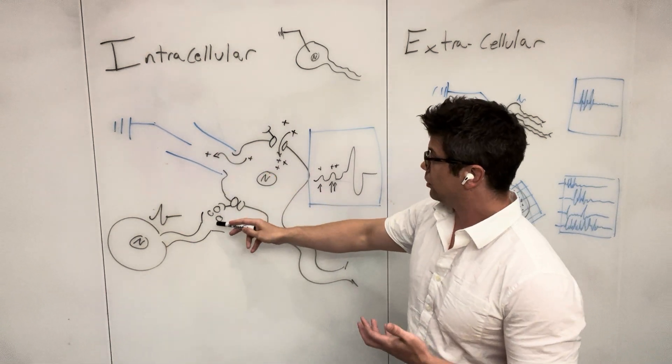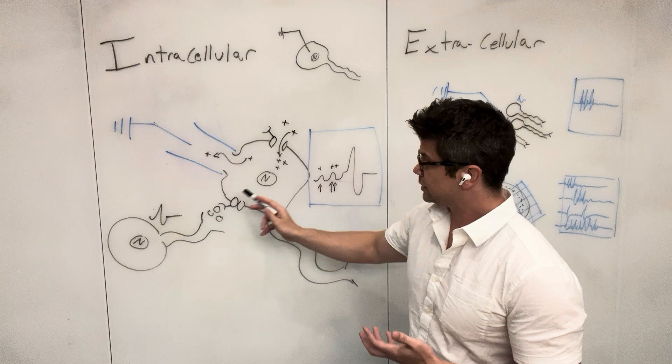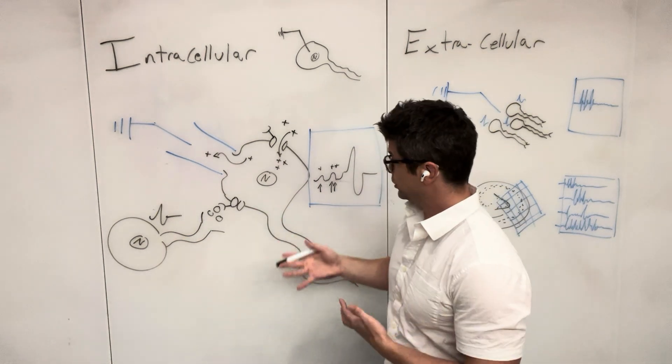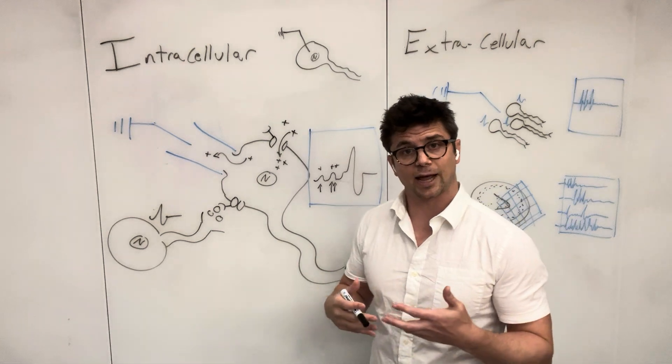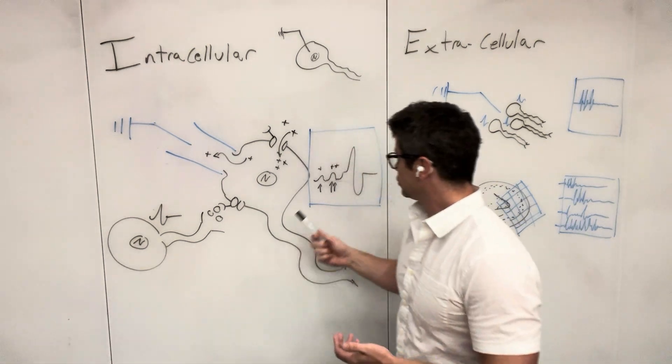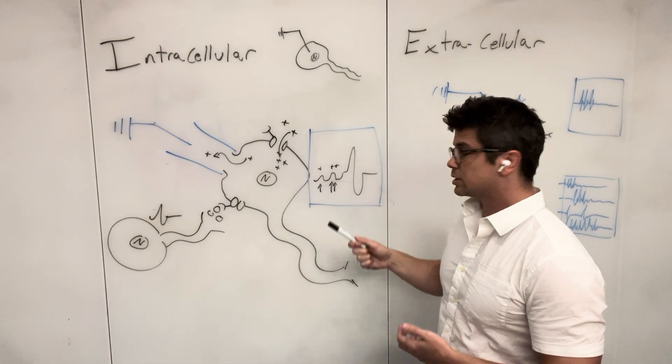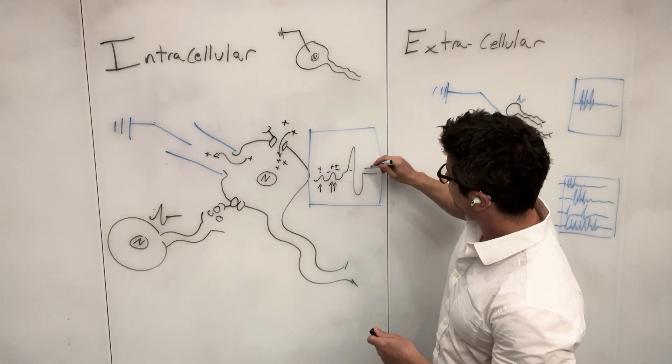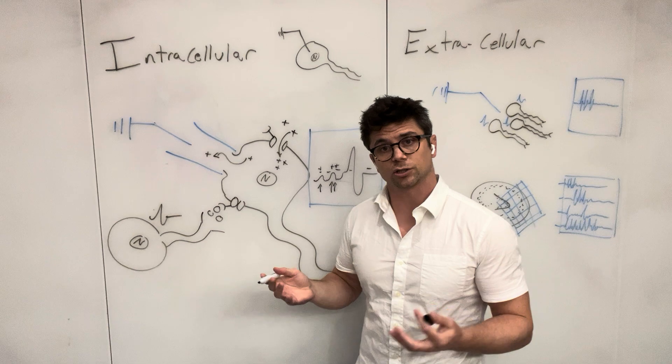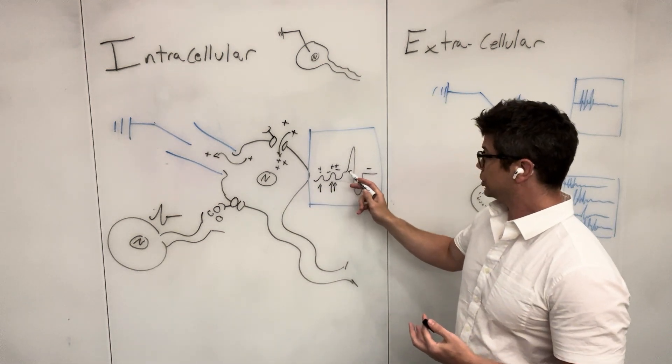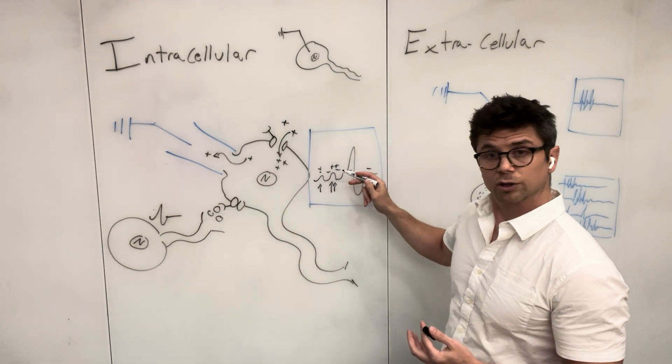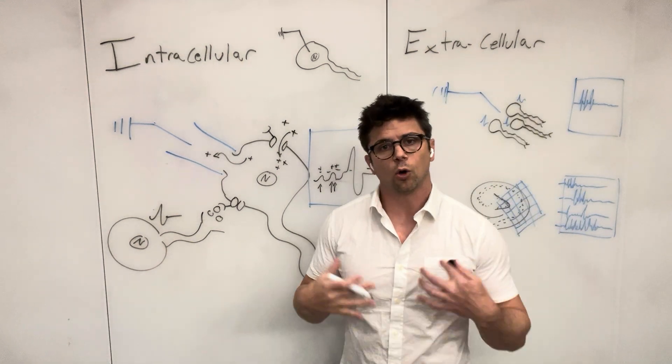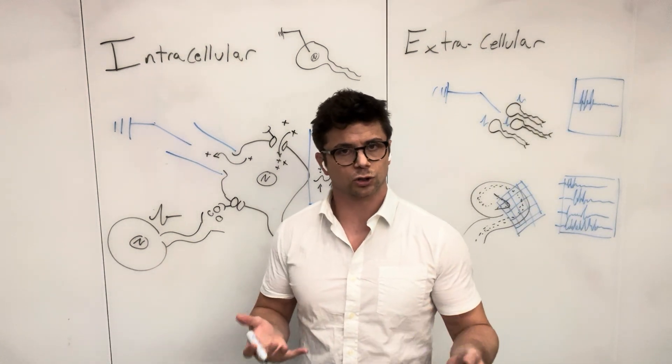Not all of these synaptic action potentials from other neurons actually cause the first neuron to have an action potential. You'll see these little bumps in voltage that don't quite meet the threshold for triggering an action potential. And then you'll see when they actually do reach that critical voltage, it then fires.